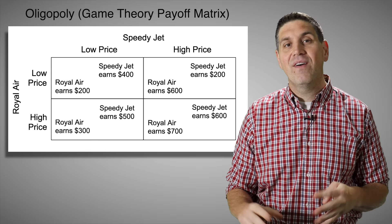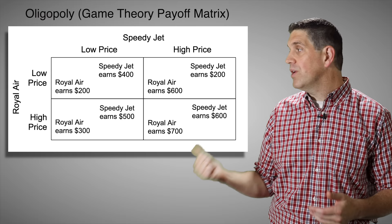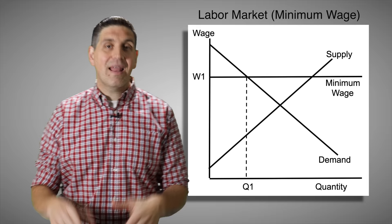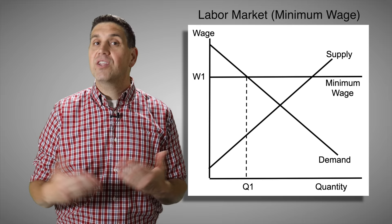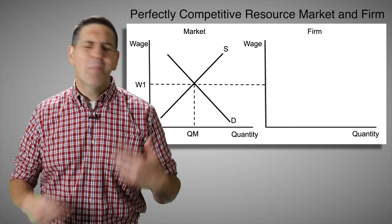There's one more concept in unit four — oligopolies and game theory. This is a payoff matrix showing the results of decisions made by two different players. You need to be able to find things like dominant strategy and Nash equilibrium. Now in unit five, we're going back to supply and demand but looking at labor instead of products. We have wage and quantity of workers, and this can show the idea of a minimum wage — the same idea as a price floor, except it's a wage floor.